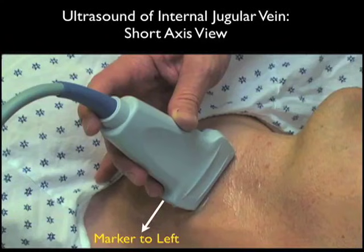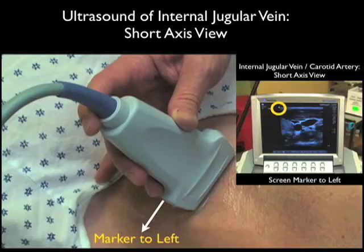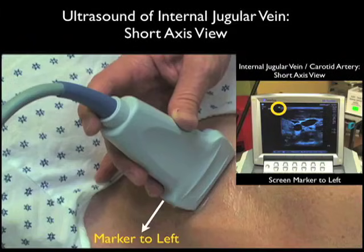The reason for that is the orientation of the probe marker will line up to the orientation of the screen indicator dot, which we see here is oriented towards the left on the ultrasound screen. Thus, the left side of the probe will orient directly to the left side of the screen, and this will allow us to orient ourselves as we place the needle underneath the patient's neck and cannulate the vein.